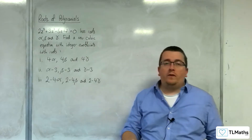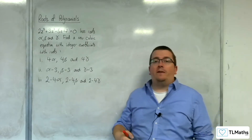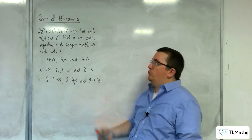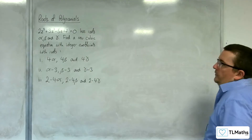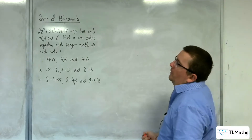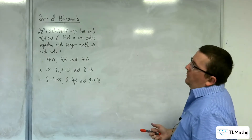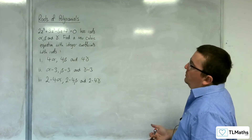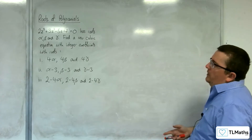Continuing on from the previous video where we looked at substitution method with quadratics, we're going to look at some cubics now. So we've got 2z cubed plus 3z squared, take away 5z, take away 7 equals 0, with roots alpha, beta, and gamma.